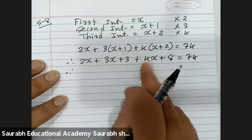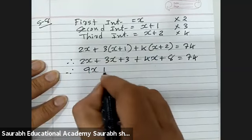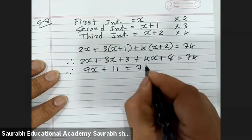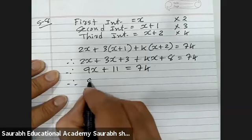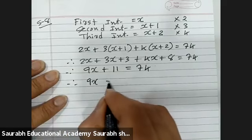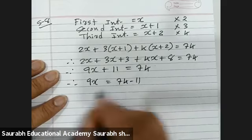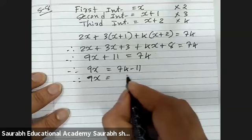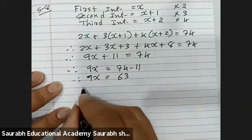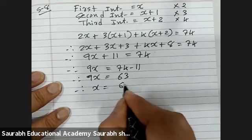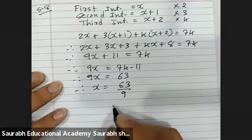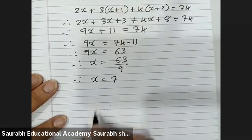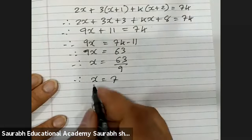Now, 2x plus 3x plus 4x gives 9x total, and 3 plus 8 gives 11. So 9x plus 11 equals 74. Therefore 9x equals 74 minus 11, which is 63. So x equals 63 divided by 9, giving x equals 7. The first number is 7.